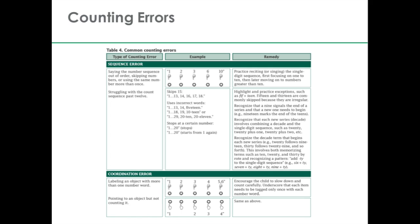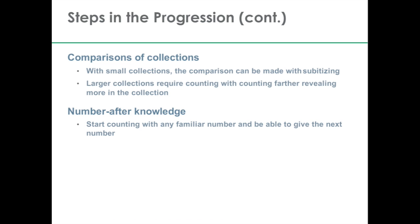There are also another set of errors called coordination errors — errors of coordinating both the count words and the objects. Children may double count an object, for example saying 1, 2, 3, 5, 6, pointing to an object twice. They may also skip out a count word, saying 1, 2, 3, 4 when there are actually 5 objects there, or they could skip out an object. Again, these are very common errors that can help show where the child is in this developmental progression.